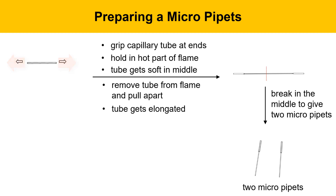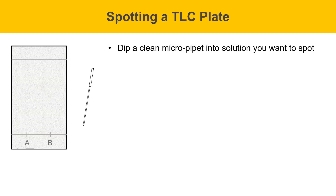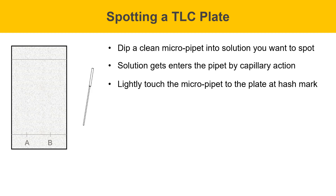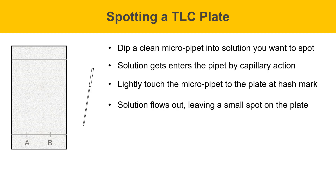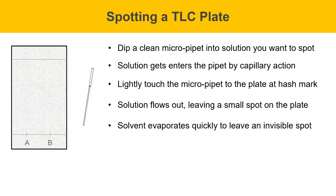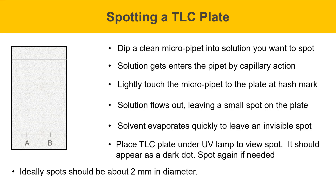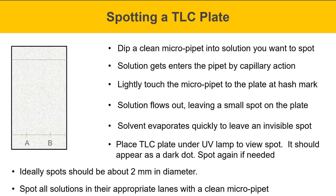To spot the TLC plate, dip a clean micropipette into the solution you want to spot — the solution will get sucked up by capillary action. Then lightly touch the micropipette to the plate at the hash mark; the solution will flow out, leaving a spot on the plate. The solvent evaporates quickly, leaving an invisible spot in today's experiment because the analgesics are colorless. Place the TLC plate under a UV lamp to view the spot — the TLC plate contains a fluorescent indicator that glows under UV light, making the spots visible. Ideally, spots should be about two millimeters in diameter.